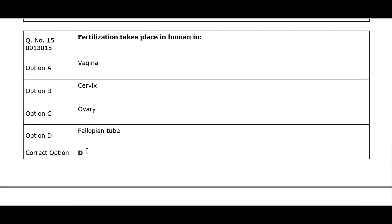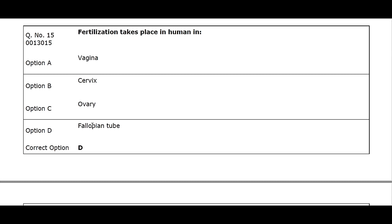Q15. Fertilization takes place in humans in: Option A. Vagina. Option B. Cervix. Option C. Ovary. Option D. Fallopian tube. Correct option D.